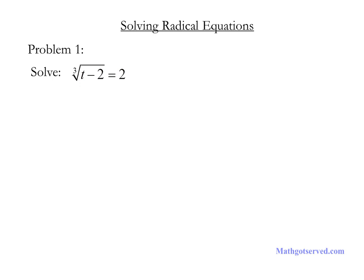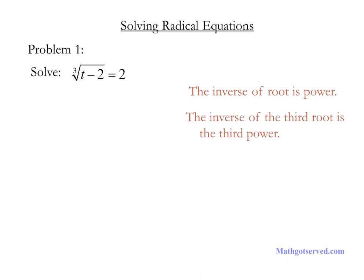So let's go ahead and execute the steps. We're going to use the inverse of the cube root, and we know that the inverse of root is power. So the inverse of the third root is the third power. That simply means we will be taking the third power of both sides of the equation in order to eliminate the cube root from the left side of the equation. So you notice I have cubed both sides — the goal is to get rid of this cube root by making use of its inverse, which is the third power.